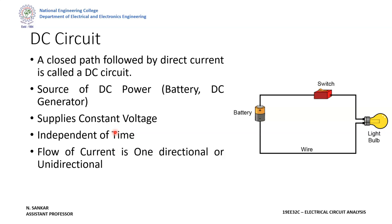The voltage should be constant and independent of time. Another key point: the flow of current should be in only one direction — we call this unidirectional. In the circuit, current flows from the positive terminal of the battery to the switch, from switch to lamp, lamp back to the battery — in the clockwise direction. If you want anticlockwise direction, you have to interchange the battery terminals. Anyhow, the current will only flow in one direction when your battery is connected to the load.